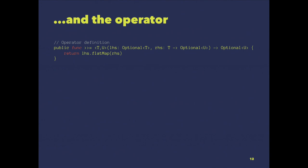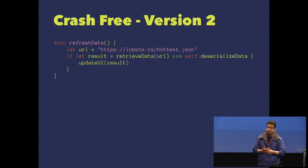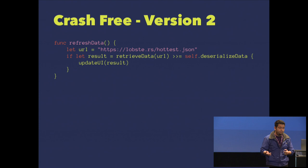Let's see our crash-free version. We have the result: retrieve data combined with the serialized data function. It's clear — from the left we retrieve the data, then we serialize the data, and if we have a valid result, we update the UI.